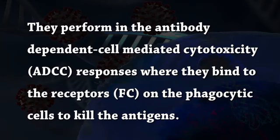IgG is found in monomeric form, has a small size, and can diffuse through membranes. IgG performs in antibody-dependent cell-mediated cytotoxicity (ADCC) responses, where it binds to receptors on phagocytic cells to kill the antigen. IgG shows its action against antigens and there is more production of IgG by plasma cells.